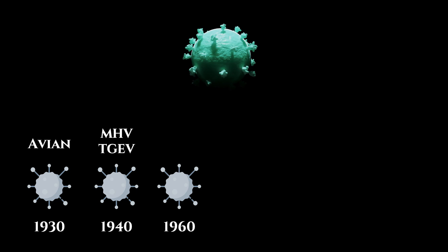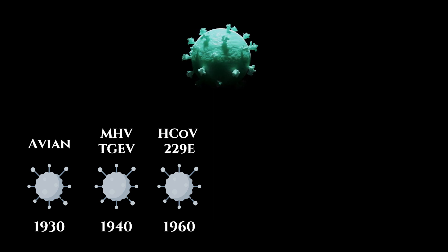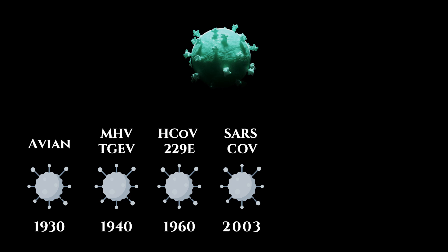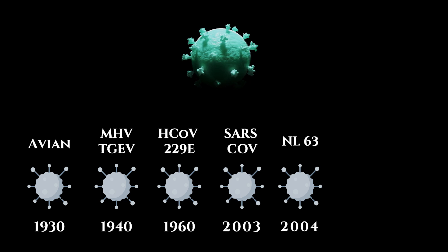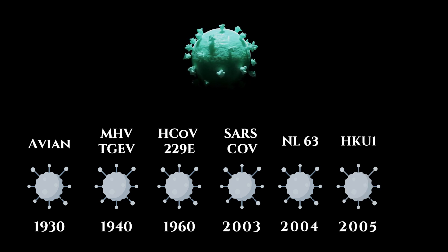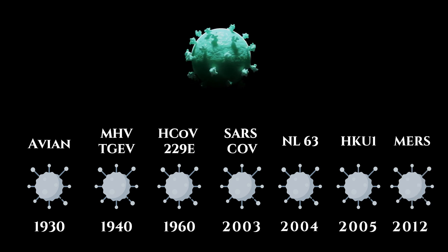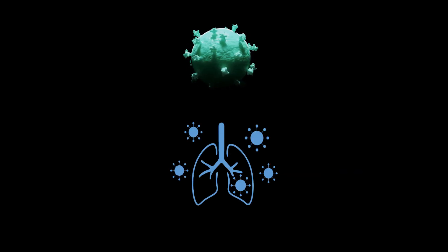The first human coronavirus, HCOV-229E, was discovered in the 1960s, followed by the first epidemic caused by the coronavirus family, SARS-CoV in 2003, then HCOV-NL63 in 2004 and HKU1 in 2005. The second epidemic caused by the coronavirus family is MERS in 2012, followed by the present pandemic SARS-CoV-2. These viruses are found to severely infect the respiratory system.